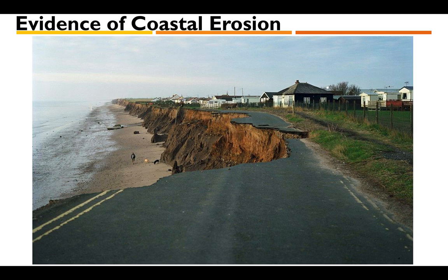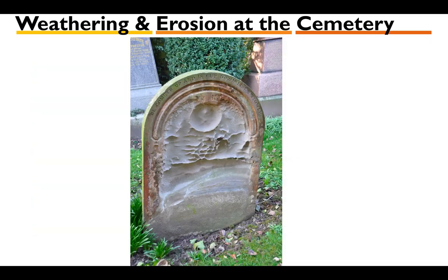Here's an example of weathering and erosion at a cemetery. Some tombstones are made of marble, which doesn't react well to acid rain. Since we have pollution in our atmosphere, our rain is slightly acidic, and when it hits marble tombstones it starts to chemically weather them — breaking them down over time and changing the surface of the tombstone.